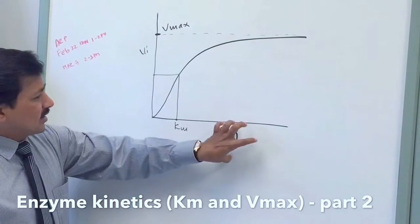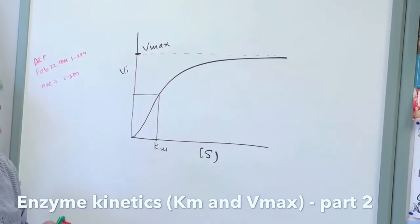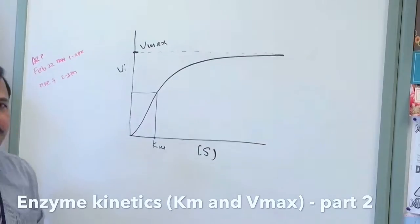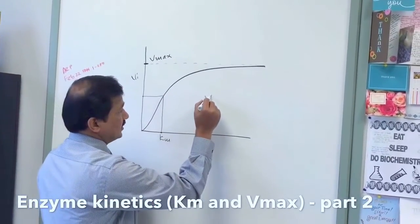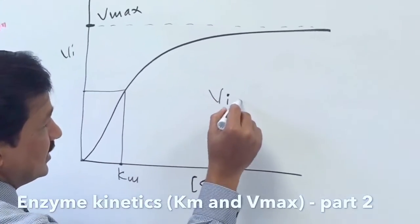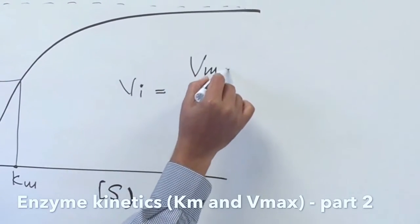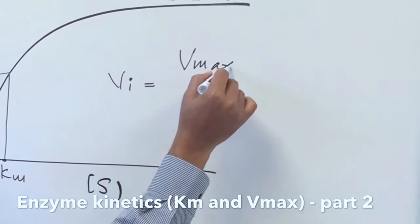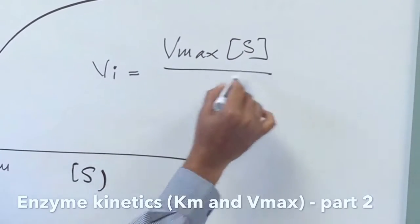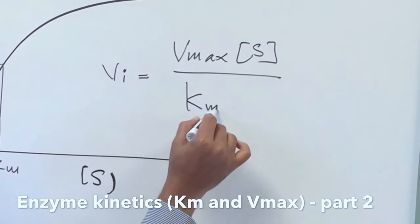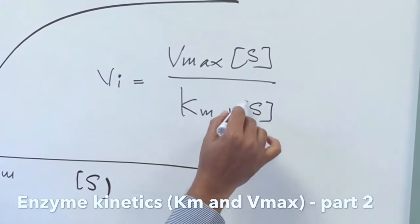The relationship between substrate concentration, Km, Vmax, and initial velocity can all be captured in one equation: initial velocity equals Vmax multiplied by substrate concentration, divided by Km plus substrate concentration.